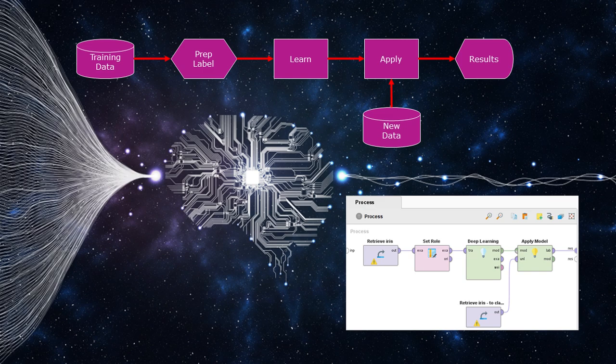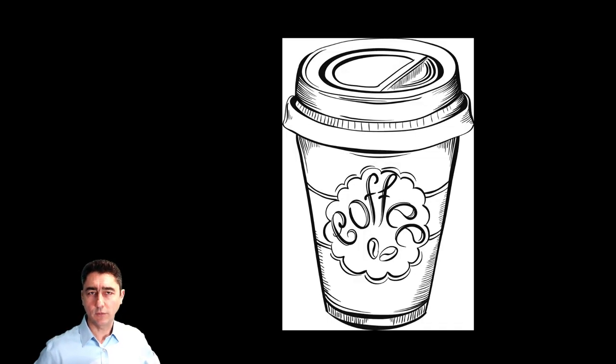And an example might help illustrate the point. Let's take a coffee cup we recognize. But this one has a new logo that we've not seen before. We would not be confounded. Simple stuff, right?